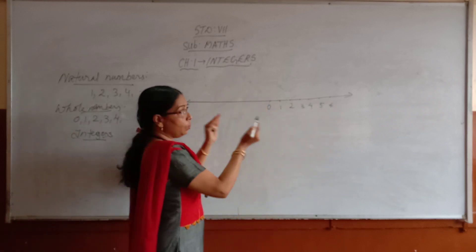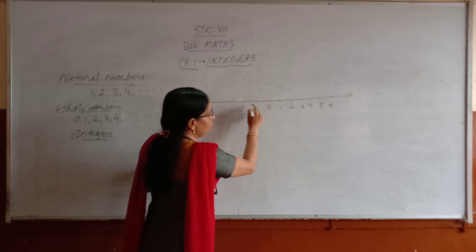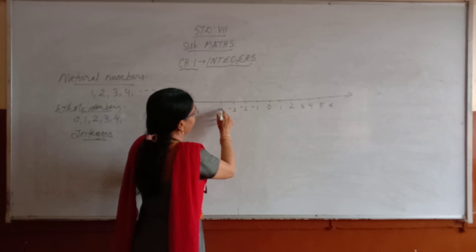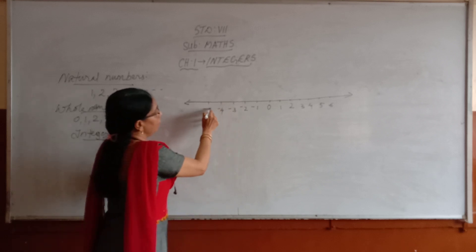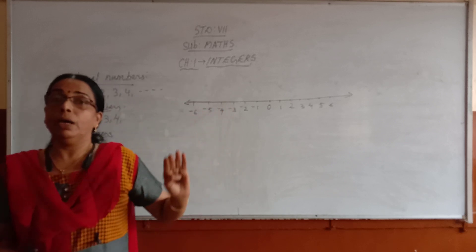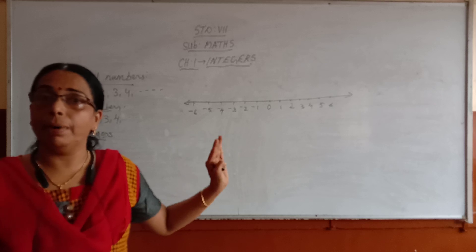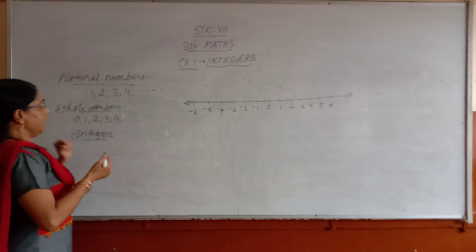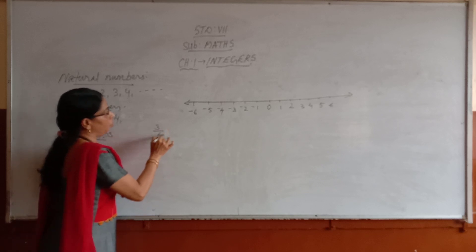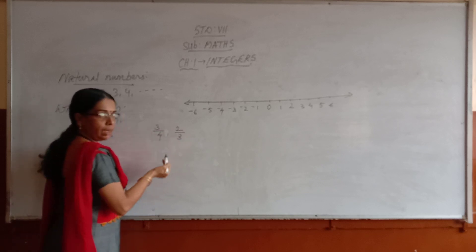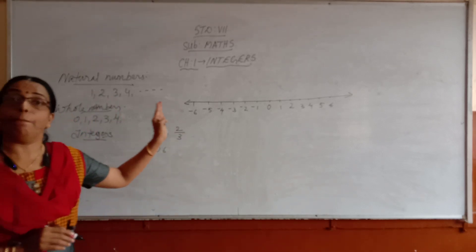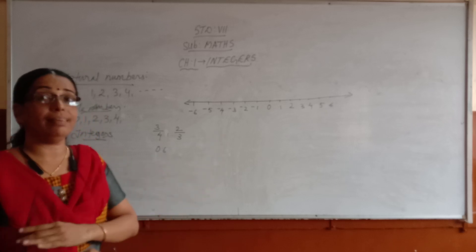Going towards the left, equal distance: minus 1, minus 2, minus 3, minus 4, minus 5, minus 6. So integers can be plotted on a number line. We can also mark numbers like 3/4, 2/3, or even 0.6 on the number line, but they are not considered as integers.